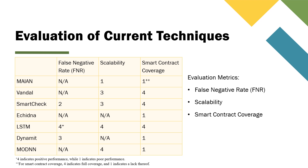For Echidna, we don't give it a score for scalability because the Echidna tool allows the user to set a limit on the running time and sequence length when running tests. Therefore, the running time is not directly correlated in all cases to the number of vulnerabilities supported. But like the false negative rate, a score of one indicates a tool that is not easily scalable and a score of four indicates that it is highly scalable.